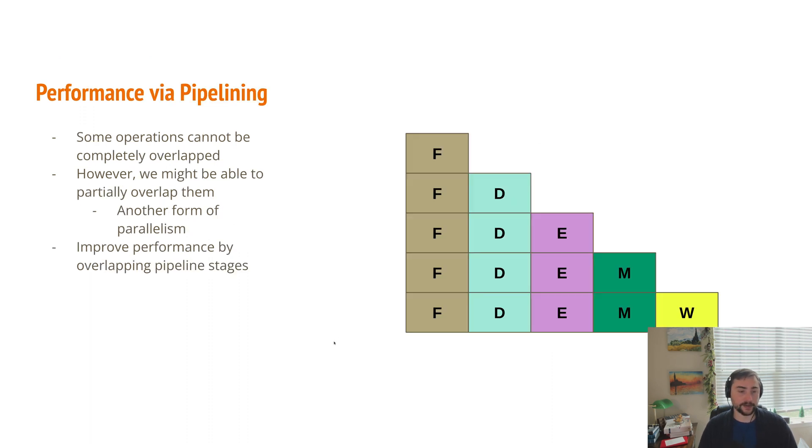Another idea, sticking on this topic of performance and also parallelism, is this idea of performance via pipelining. So some operations can't be overlapped completely, but we may be able to partially overlap them. And this is just another form of parallelism. We can improve performance by overlapping pipeline stages, and the common example of this is with the instructions that we end up executing. So our CPUs have pipelines...